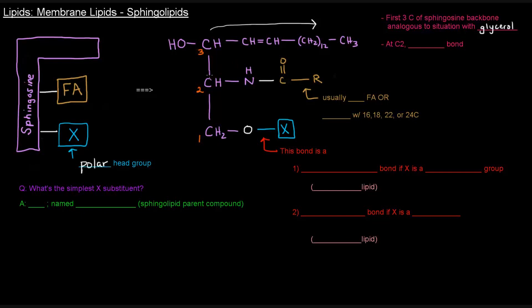Now, at carbon number two, we have the fatty acyl portion. And that portion is usually coming from a saturated fatty acid or a monounsaturated fatty acid with sixteen, eighteen, twenty-two, or twenty-four carbons when it comes to sphingolipids.